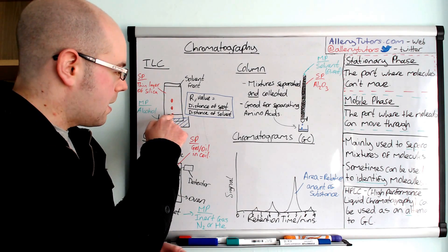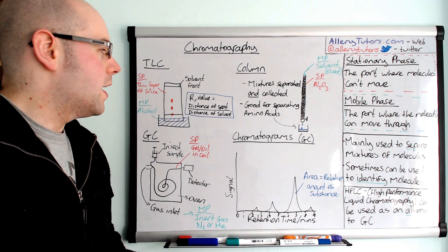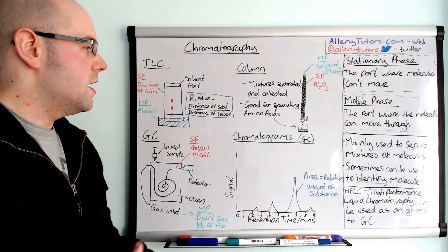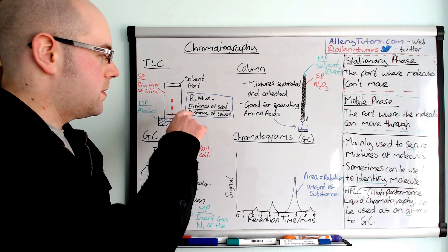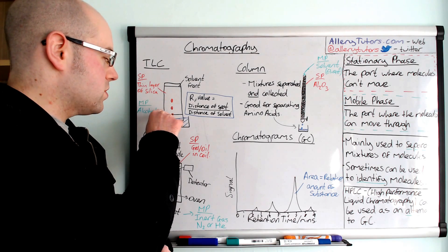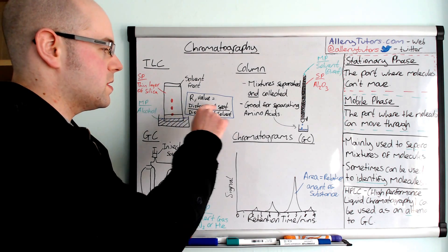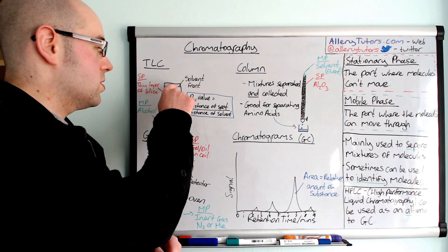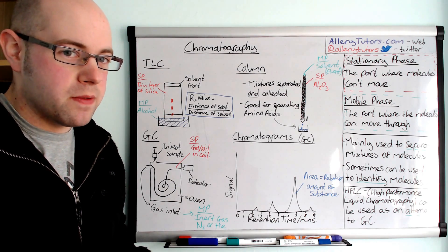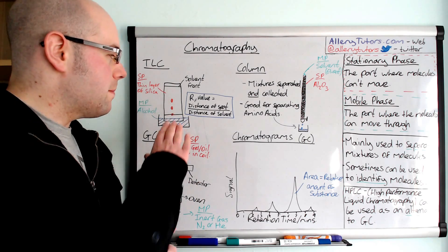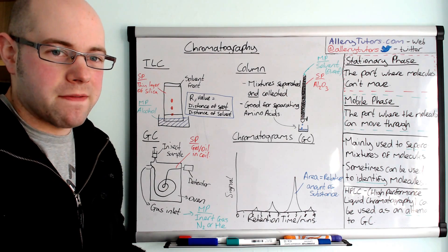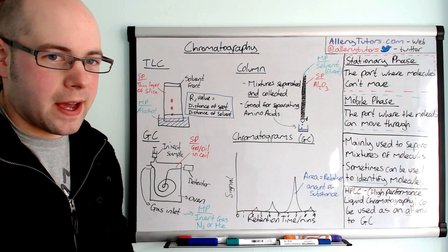Effectively what we've done is taken this chemical and separated the two components out. This is quite useful because we can not only separate but also identify the potential chemicals using something called an RF value. The RF value is basically the distance the spot has travelled from where it started, divided by the distance that the solvent has travelled up to the solvent line. We can then compare that value against a library of known values. It's not always very accurate though, because sometimes certain chemicals have very similar RF values and it's not 100% precise.